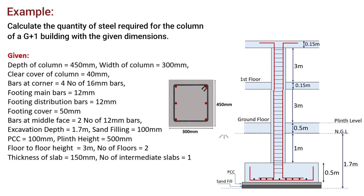To calculate the total quantity of steel, we need to do the calculations for each type of bar separately. Since this column is provided with three types of bars — main bars of size 16 mm, side bars 12 mm, and ties of size 8 mm.